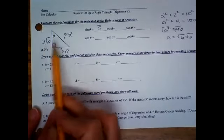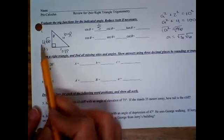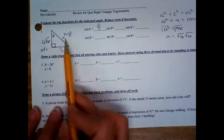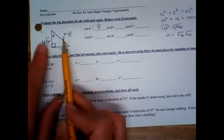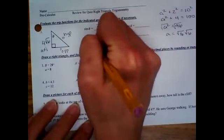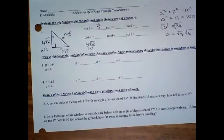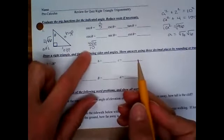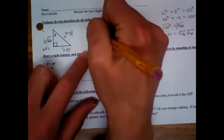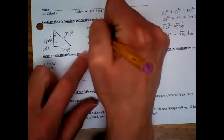So cosine would be adjacent over hypotenuse. That would be 4√6 over 10. You're going to have to reduce the 4 and the 10 though. So 4 tenths would reduce to 2 fifths. So cosine would be 2√6 over 5.